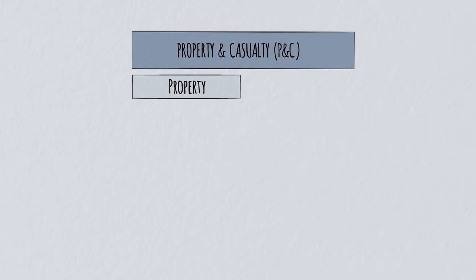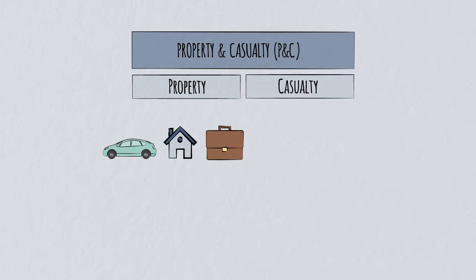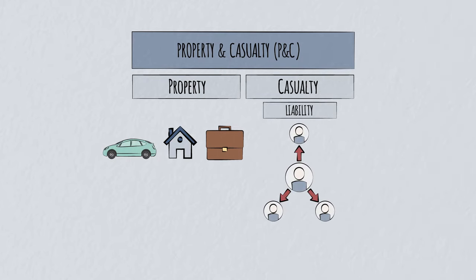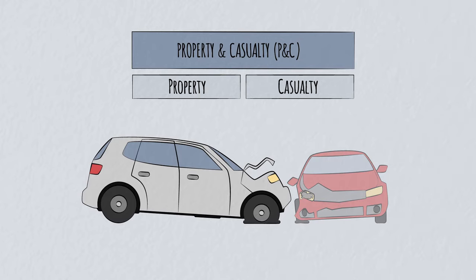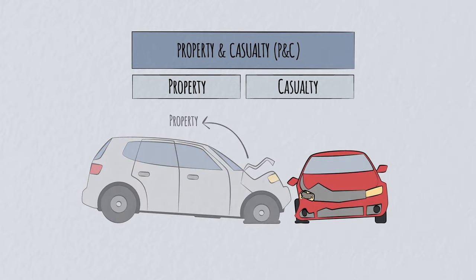Property includes things owned like cars and buildings or a business. Casualty, otherwise known as liability, covers your responsibilities to others—what you might have to pay because of something you did or failed to do. If you hit another car, the damage to your car is an example of property, but the damage to the other car is liability.